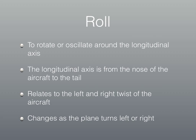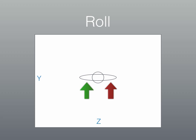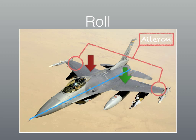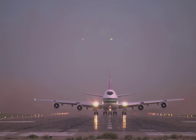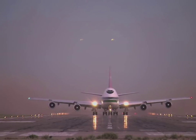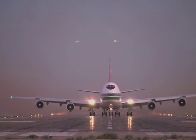Finally, there is roll, which is to rotate or oscillate around the longitudinal axis, with the longitudinal axis being from the nose to the tail of the aircraft. It relates to the left and right twist of the aircraft — that is, if you're looking at a plane from behind, the left tilt and right tilt. It changes also as the plane turns left or right. This is controlled by the ailerons. These three aircraft principal axes are all controlled from the cockpit, where the pilot has the challenging task of managing all three to ensure the plane ends up at the right destination.